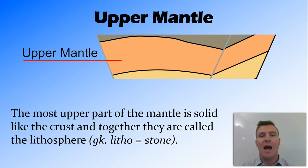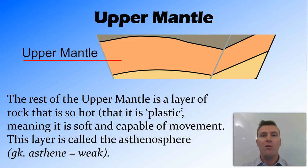So we then get into the upper mantle. Now the upper mantle can kind of be broken up into two parts. The most upper part of the upper mantle is solid and pretty much the same composition as the crust. And together we call this upper part of the upper mantle and the crust the lithosphere. And this word litho comes from the Greek word stone. Below that lithosphere, the rest of the upper mantle is still made of rock, but now the rock is so hot that it's plastic. And this means that it's soft and capable of movement.